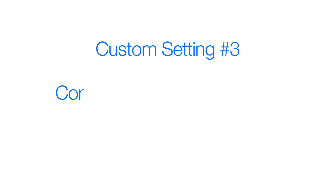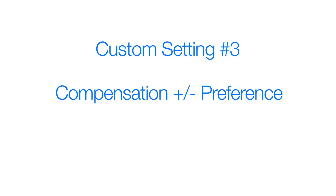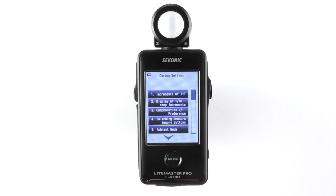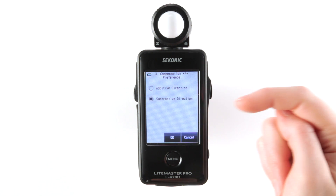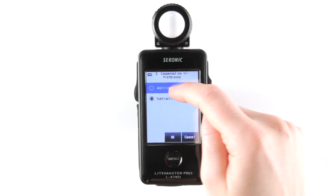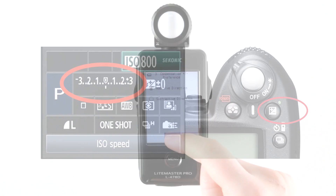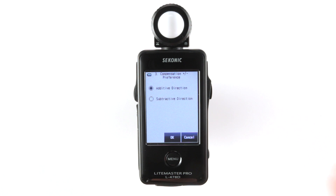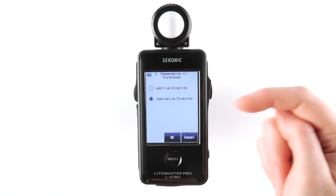Custom setting 3: compensation plus/minus preference. You can set the exposure compensation plus/minus adjustment to match your camera or set it to the traditional metering method.